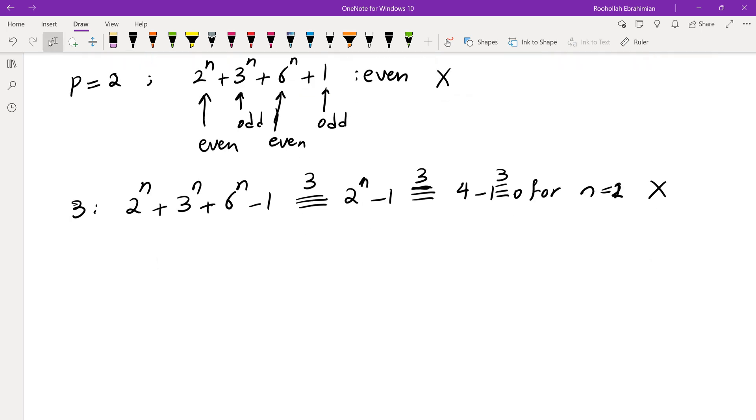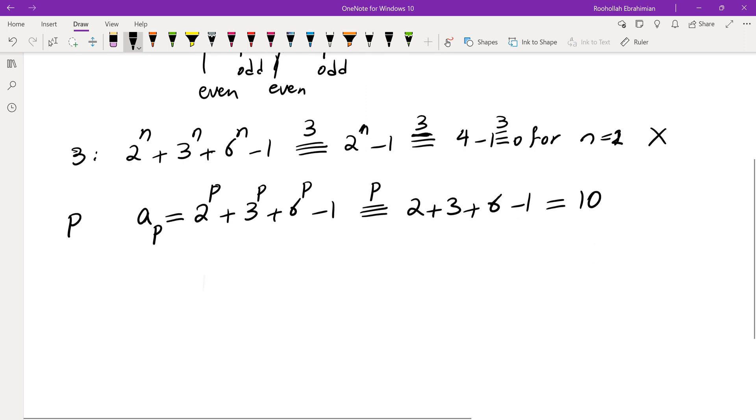So now for a prime p, I was hoping that I can evaluate some terms of this sequence. The very first thing that I thought was what if I replace the exponent by p? When I take that mod p by Fermat's little theorem, I would get 2 plus 3 plus 6 minus 1, which is in fact 10. So at least for p equals 5, this is divisible by 5.